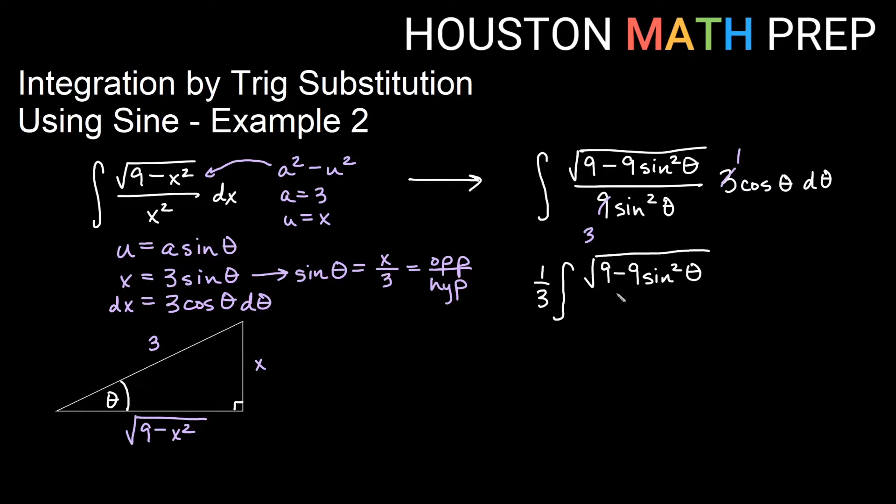I'm going to go ahead and leave this and then talk about what to do with this under the root. So this is not exactly a Pythagorean identity under the root, but it is a multiple of 1. So if I think about from here just reducing my 3 and my 9, what we could do is factor out a 9 in the root. So we could go ahead and say the square root of 9, and then we would have a 1 minus sine squared theta once we factor out 9.